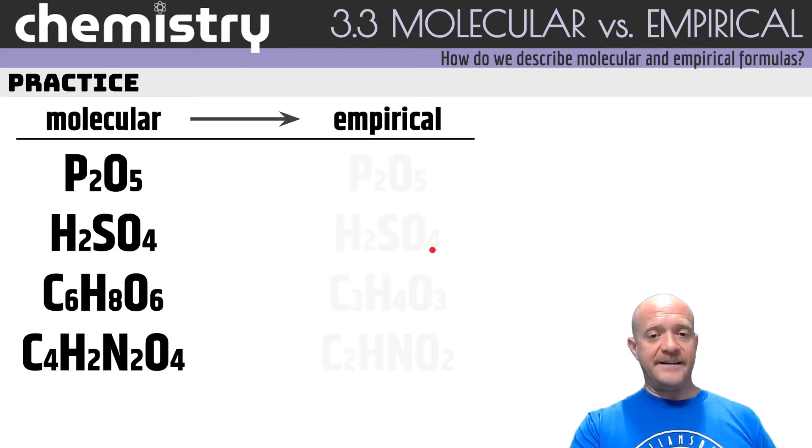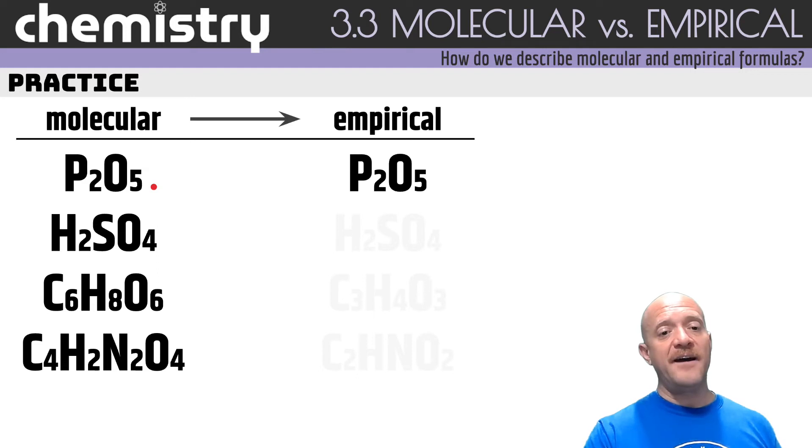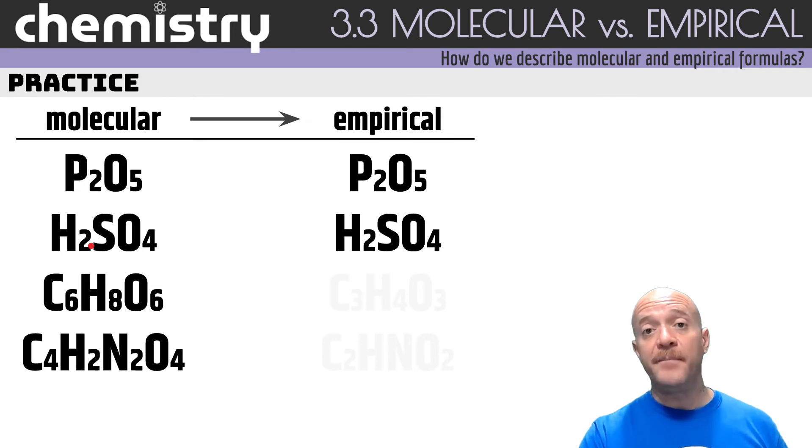So we're going to practice, and really all you want to do is figure out, can you simplify any of these? P2O5, can you simplify that? You cannot. So the molecular formula and the empirical formula are actually the same. With H2SO4, we have 2 hydrogens, 1 sulfur, 4 oxygens. If you only have 1 of a particular element, that molecular formula is also the empirical formula.